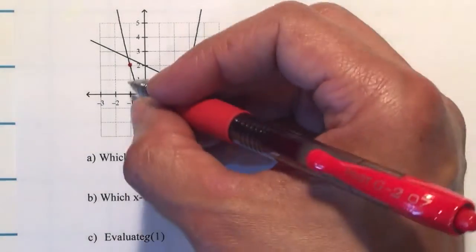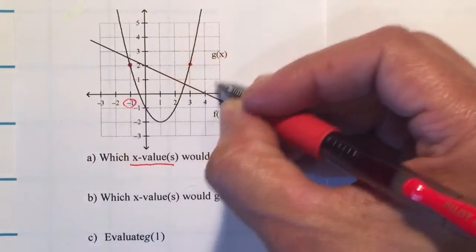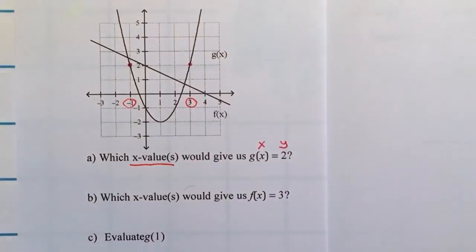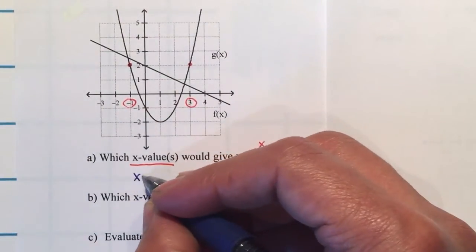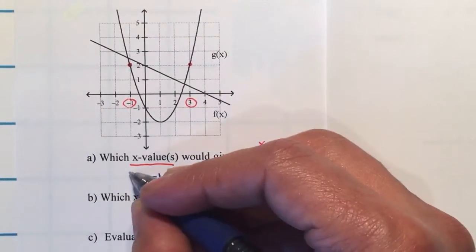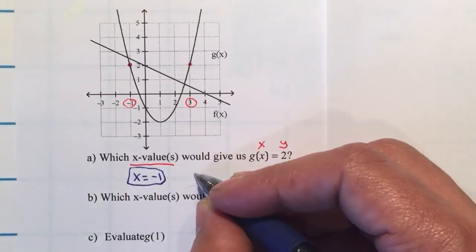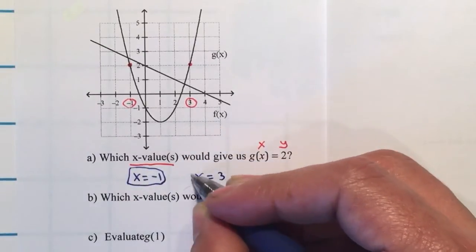So what are the values of x? The x is negative 1 and x can be also 3. So x can be negative 1 or x can be equal to positive 3.